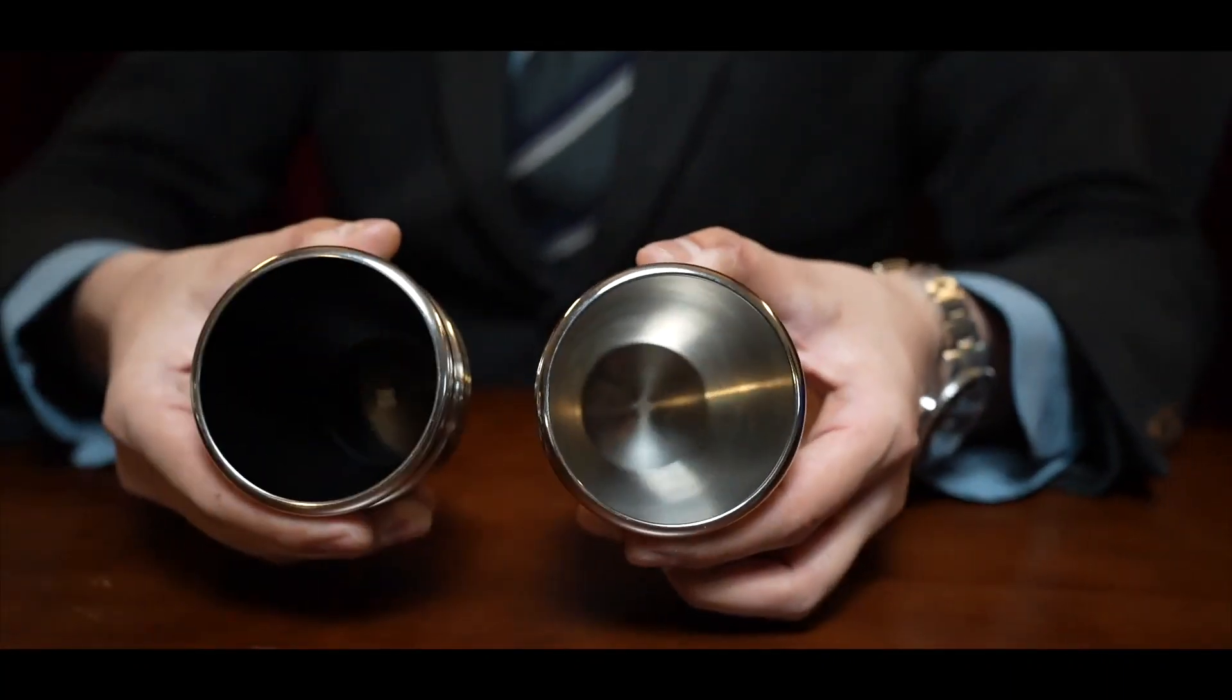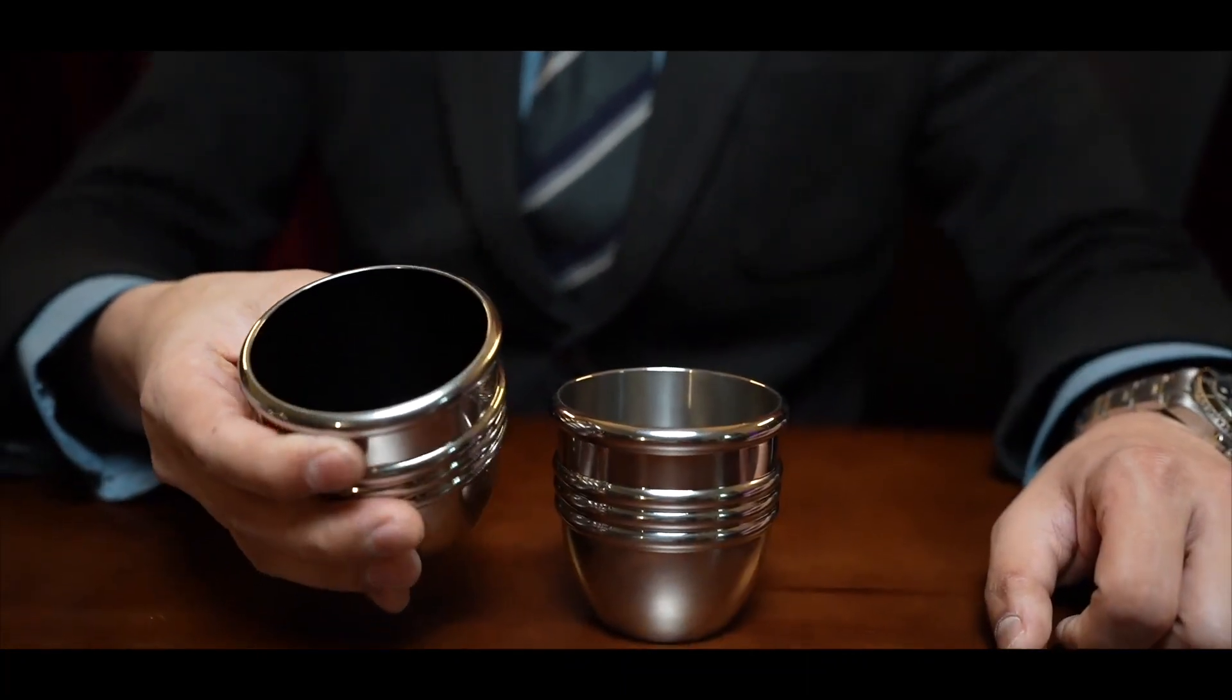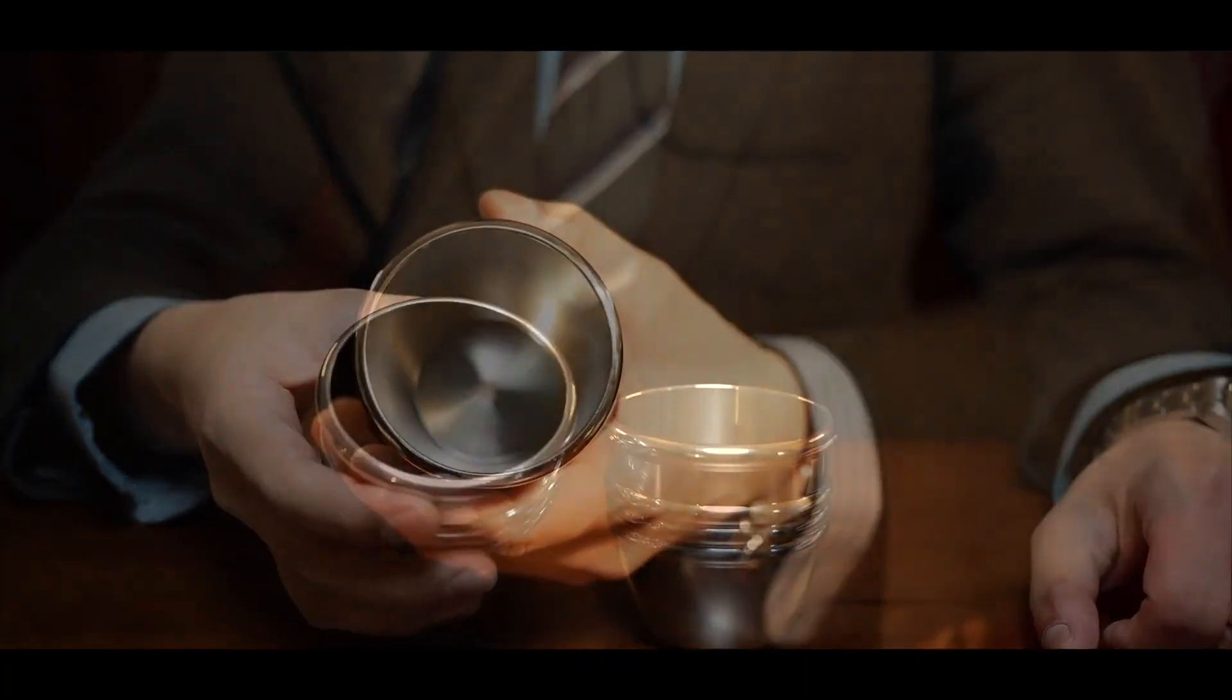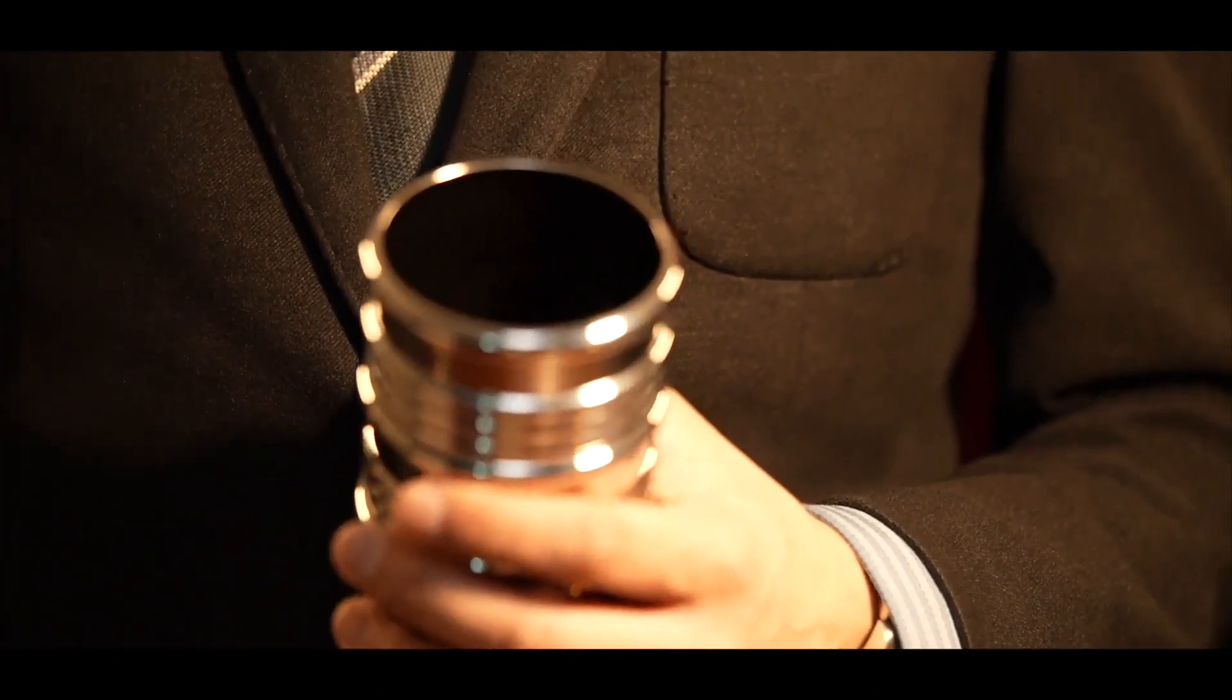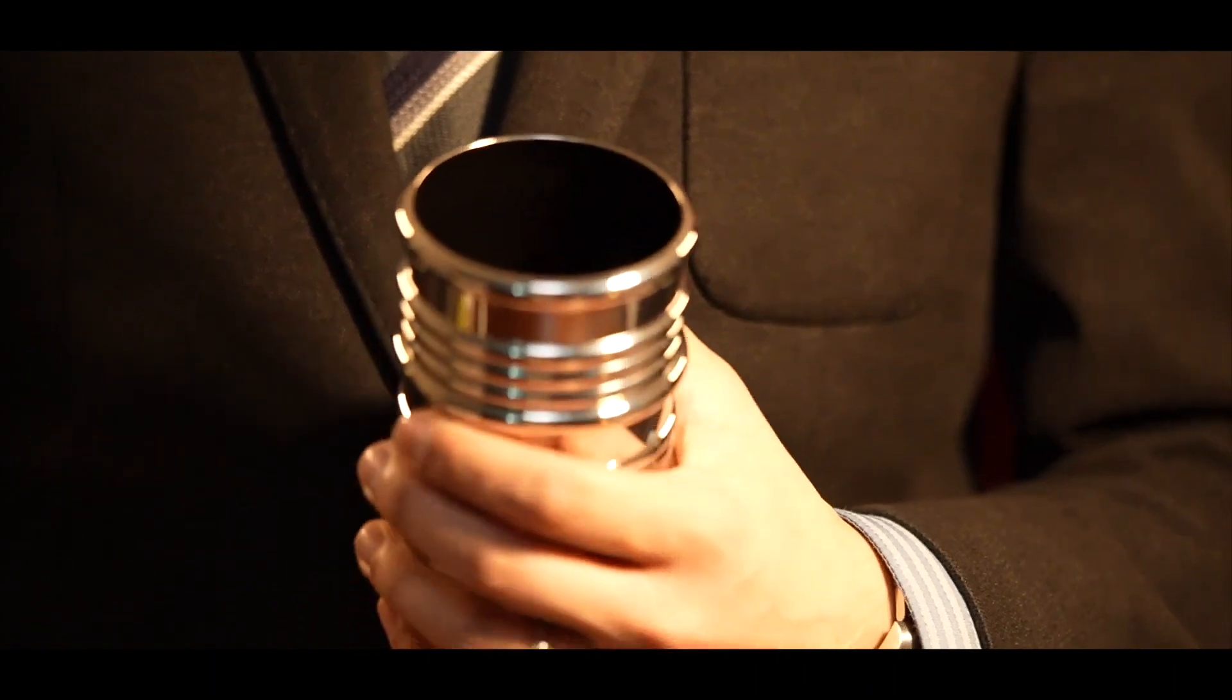We have two cup models: the regular cups and the stealth cups. The inside of the stealth cups are coated in black to prevent reflections of the object hidden inside the cup from being exposed.